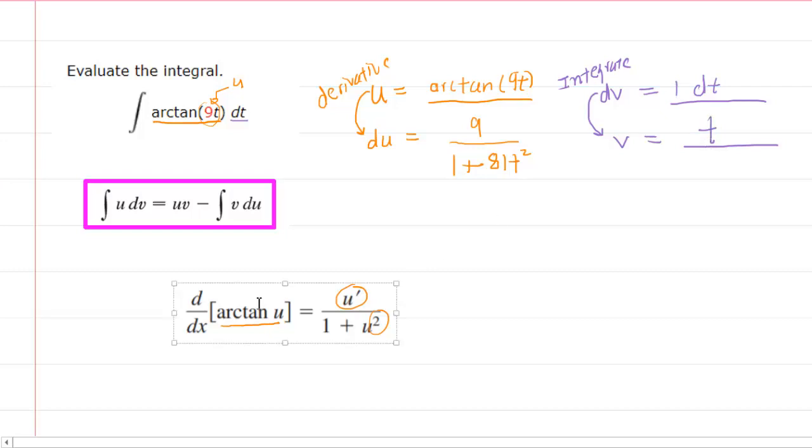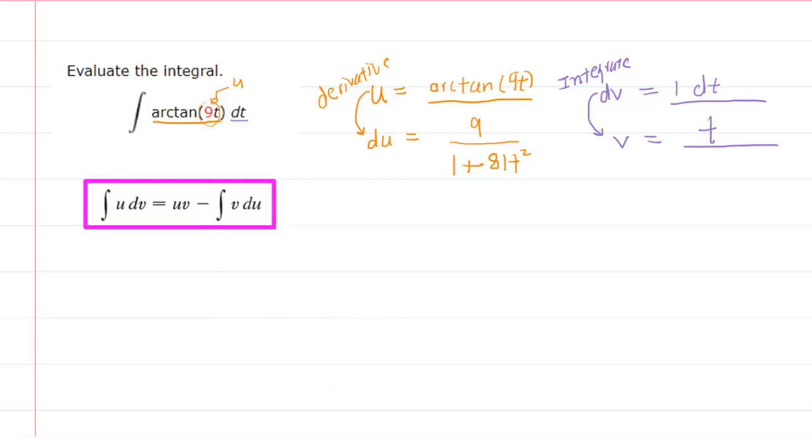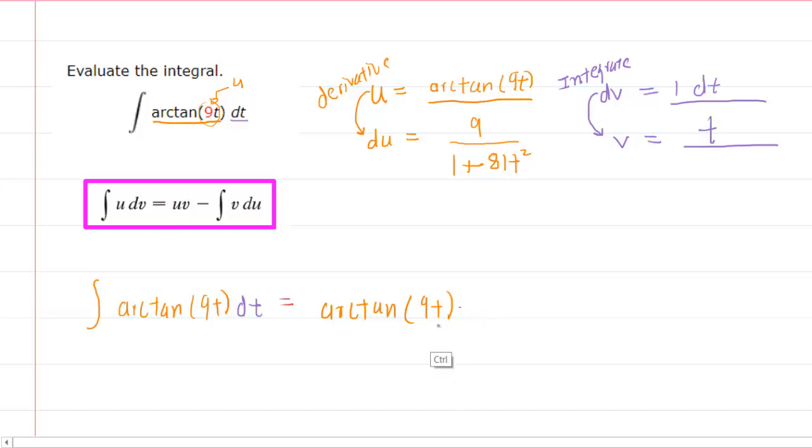So, we have filled in our template. And the next thing we need to do is follow this formula in the purple box for integration by parts. We can see that we'll have the integral of u, which we said was arctan of 9t, times dv, which we said was the dt. This will equal the u, which was our arctan of 9t multiplied by v. We could say times t. I think it's more convenient to put the t in the front here. So, we'll have t arctan of 9t.